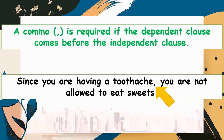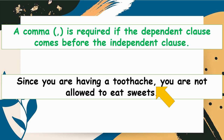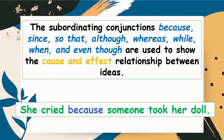Always remember that a comma is required if the dependent clause comes before the independent clause. For example: 'Since you are having a toothache, you are not allowed to eat sweets.' The dependent clause 'since you are having a toothache' is separated with a comma. The subordinating conjunctions because, since, so that, although, whereas, while, when, and even though are used to show the cause and effect relationship between ideas.